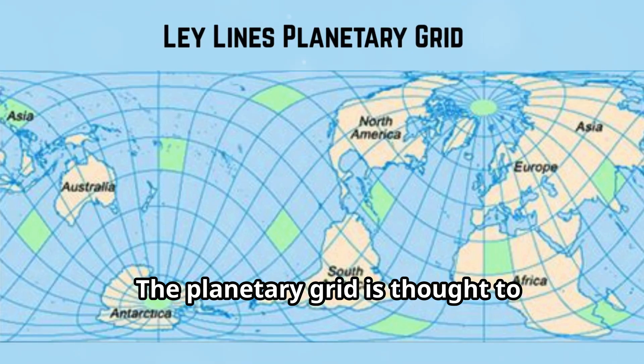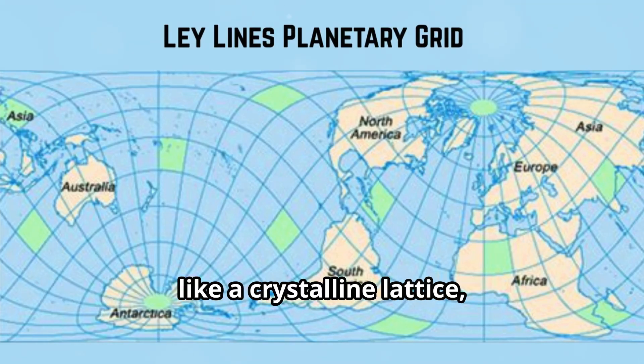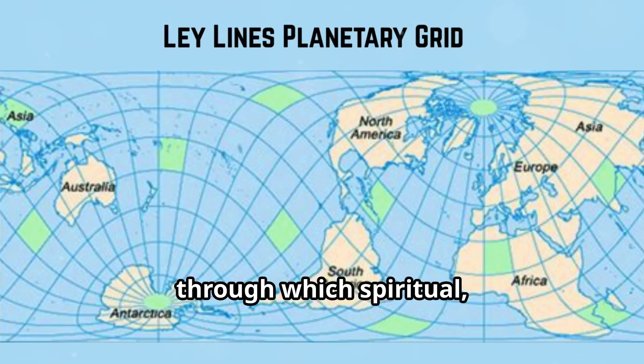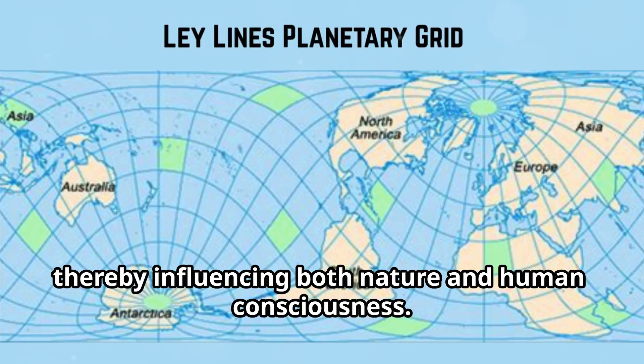The planetary grid is thought to resemble a geometric web encircling the globe, like a crystalline lattice, through which spiritual, magnetic, and cosmic energies move, thereby influencing both nature and human consciousness.